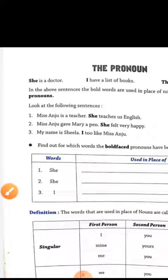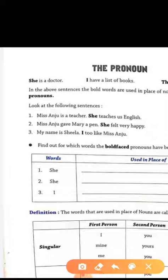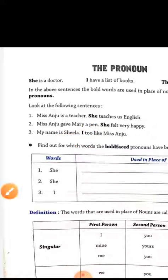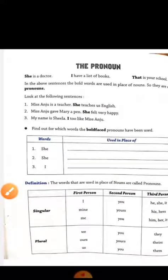Next: Miss Anju gave Mary a pen. She felt very happy. My name is Sheila. I too like Miss Anju. In the first sentence, the noun is Sheila, and in the second sentence we have written I in Sheila's place. So likewise, these words are used in the place of a name — they are pronouns.